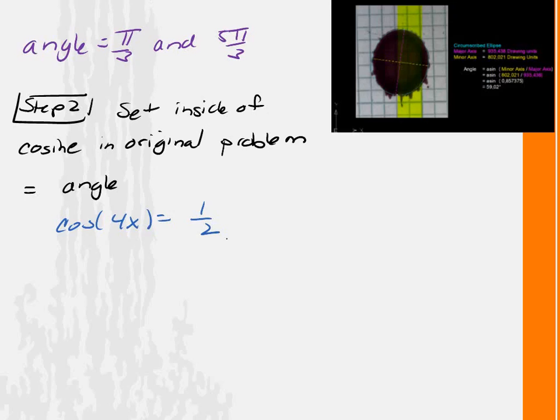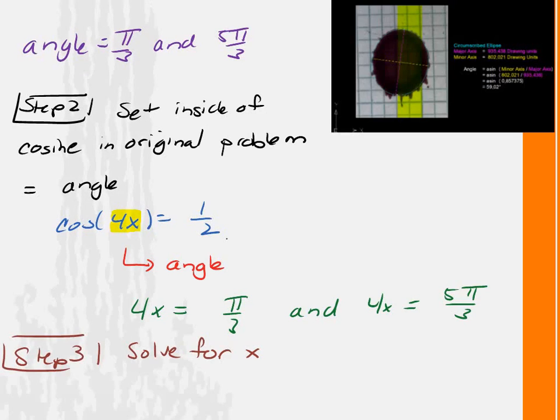Step 2 is to set the inside of the cosine equal to what I found. The inside of the cosine is the angle, which is 4x. Set it equal to pi over 3 and to 5 pi over 3. That's the angle. I know that the angle is pi over 3 and 5 pi over 3, so set the angle equal to pi over 3 and 5 pi over 3. Does that make sense? So think of this yellow that's here as the angle. This is the angle, right? We were looking for when cosine of the angle is equal to a half. We already found that. It's pi over 3 and 5 pi over 3, right? So this yellow stuff is equal to pi over 3 and the yellow stuff is equal to 5 pi over 3. And what do you have to do in algebra classes? Solve for x. Again.